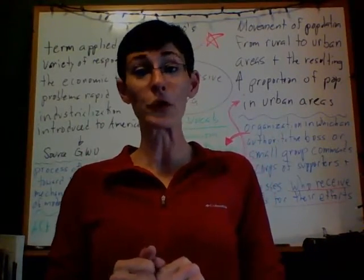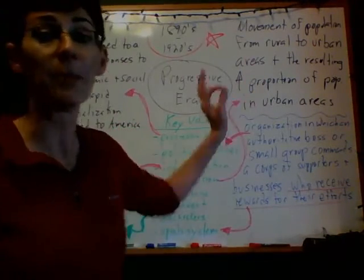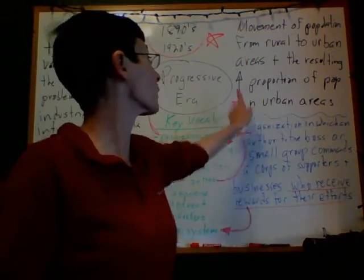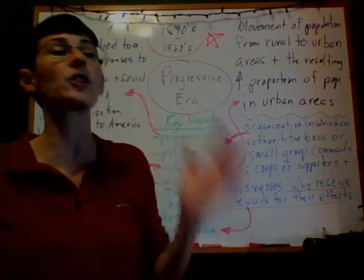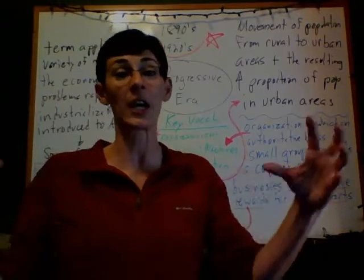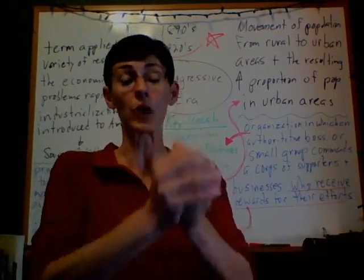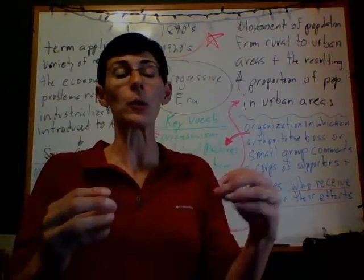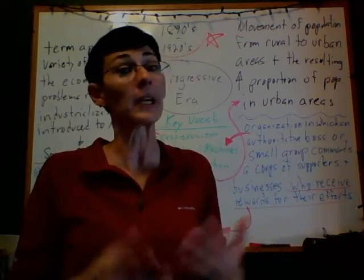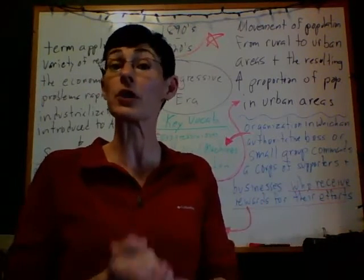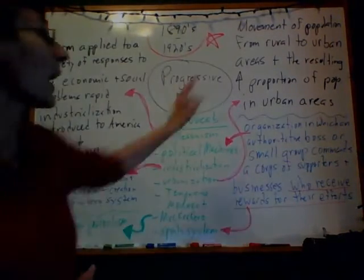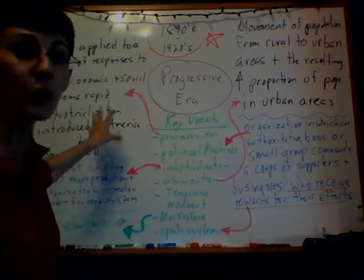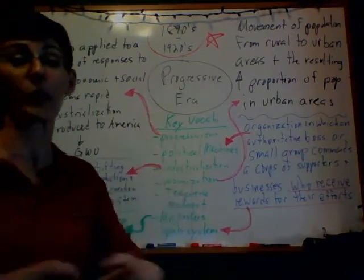Let's shift gears to urbanization, the definition of which is the movement of population from rural to urban areas and the resulting increase in the proportion of population in those urban areas. It's not just that people are moving from one place to another — it's that the concentration of population is becoming very intense in urban areas. Whenever you have a sudden and dramatic influx of people into a small area, you're going to have issues, namely competition for resources. These two processes — industrialization and urbanization — drove the Progressive Era. The progressives were trying to find solutions to these economic and social problems.